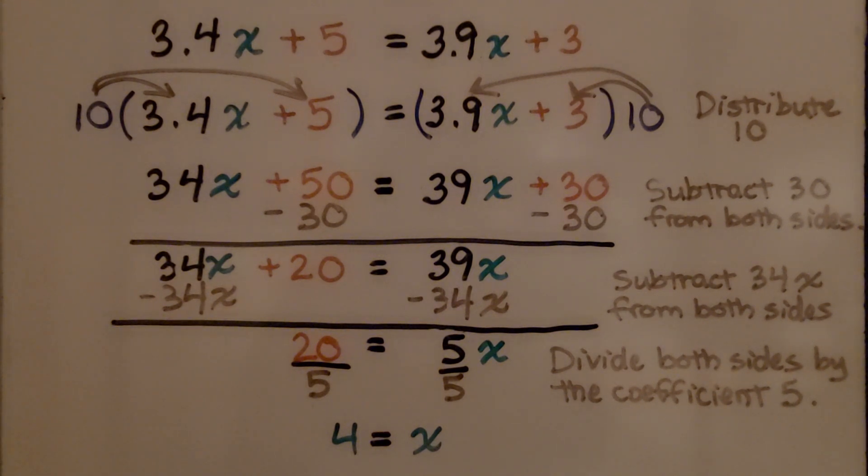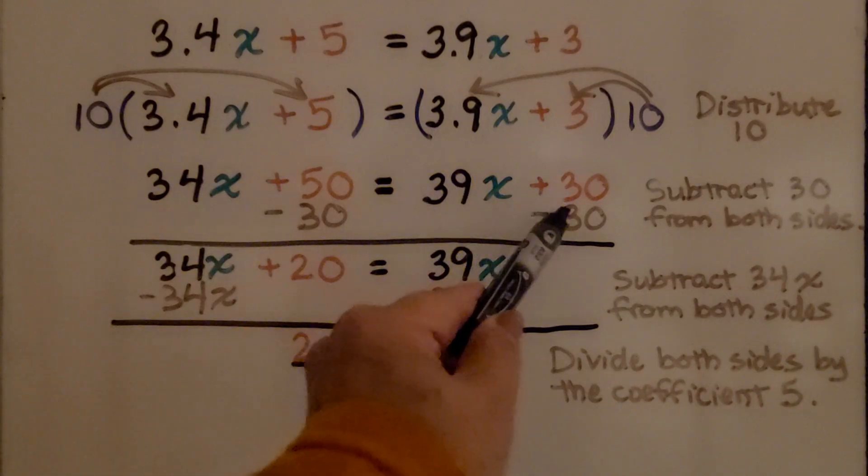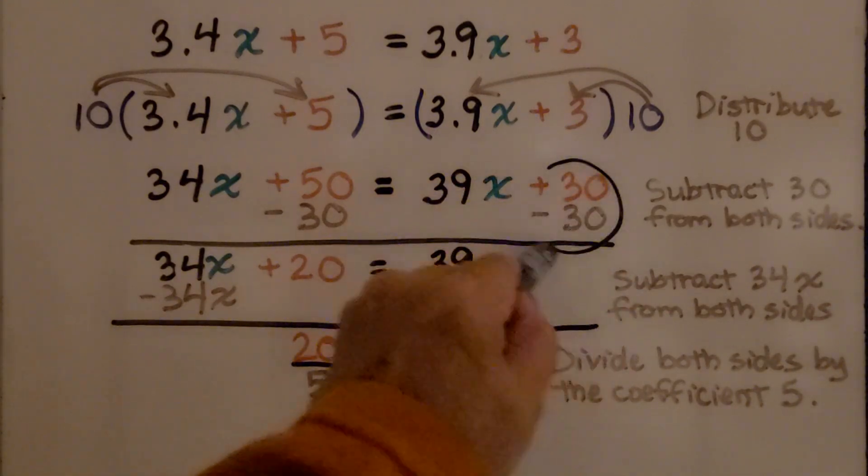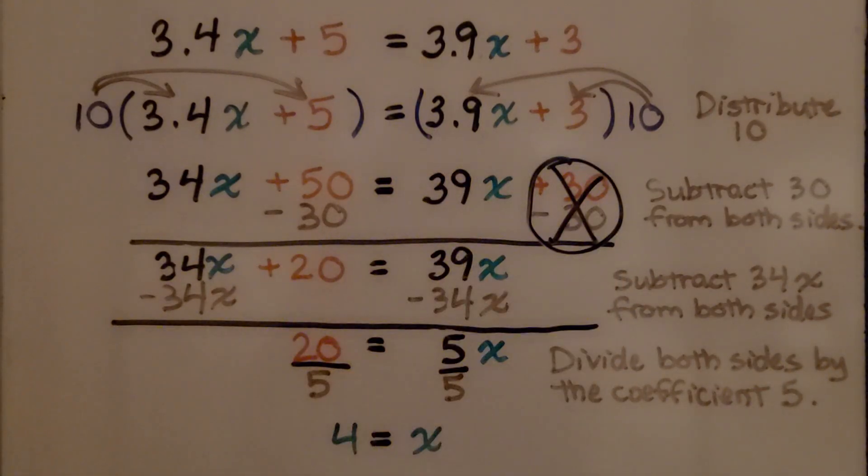Now we have whole numbers. We can just subtract the 30 from both sides. We subtract it from the 50 and from this 30. That's going to create a zero pair here. We've eliminated that.